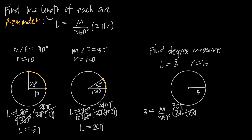Because 30 and 360 are both multiples of 6, we can go ahead and reduce this fraction. 30 becomes 5 when we divide by 6, and 360 becomes 60 degrees when we divide by 6. So we're left with 3 equals M over 60 degrees, multiplied by 5π.